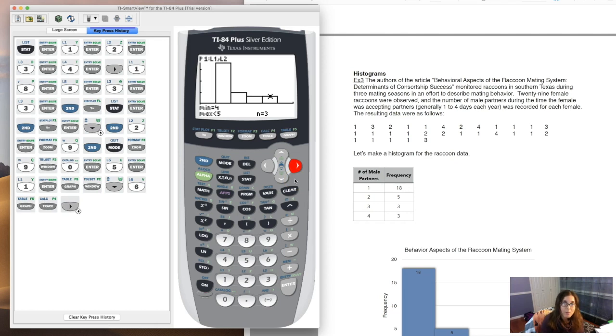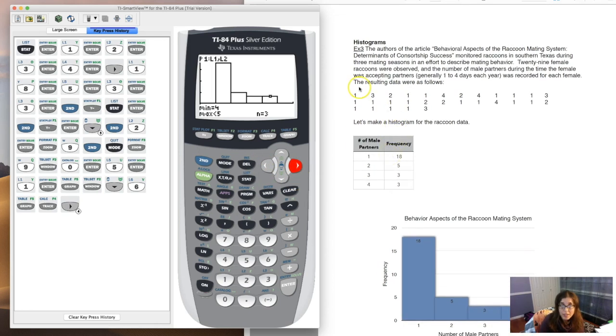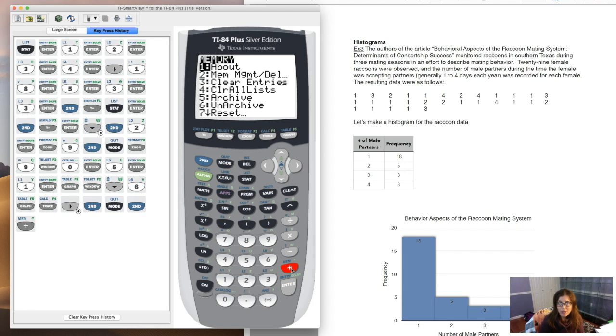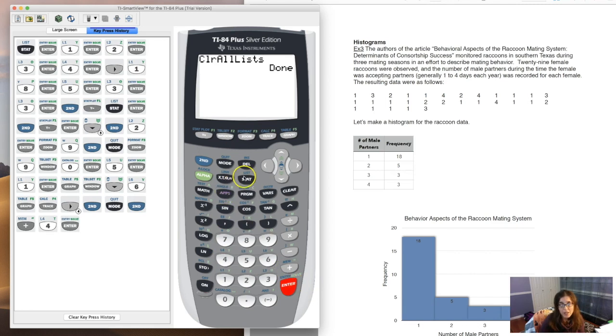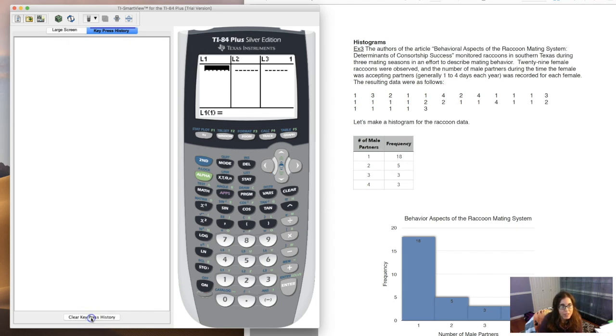Let me show you a different way of making this histogram on your calculator. What that's going to entail is we're going to put all of these data values into L1. So it's going to take a little bit longer to do the data entry, but on the flip side, I don't have to make this frequency table. Let me go back to my home screen. Since I have more than one list, I'm going to go ahead and just get rid of all of them at the same time, or at least clear them all at the same time. I'm going to hit second and the plus sign - that'll call up my memory menu. If you look at option four, clear all lists. If I just hit four and hit enter, it's going to clear them all out. Now if we look back in here, it's empty. So with that, you're going to have to give me a moment - I got to enter 29 data points.